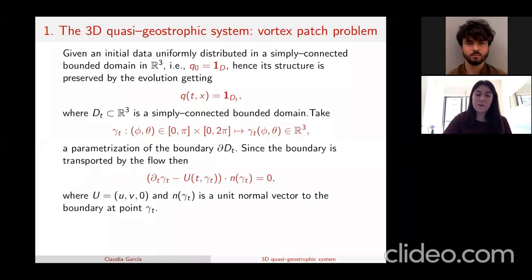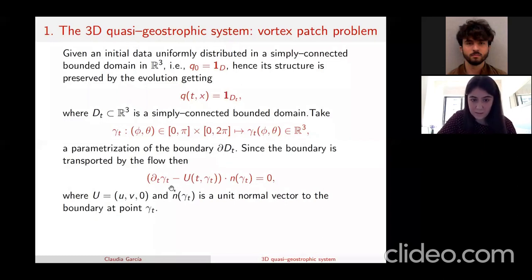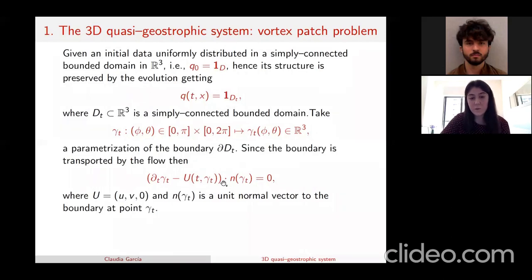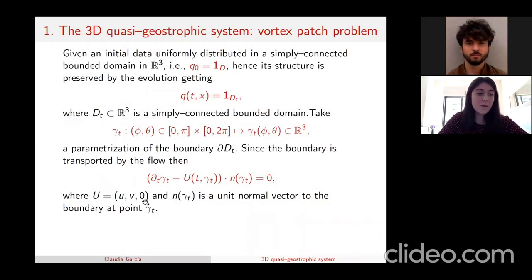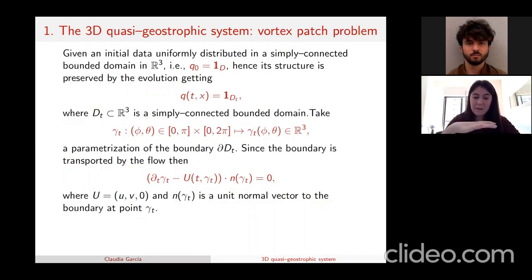The quasi-geostrophic patch problem is equivalent to solutions of an ODE for the parameterization. We have the derivative of the parameterization minus the velocity field (first two components plus zero in the third component) dotted with the normal vector to the boundary. Since the third component of u is zero, the third component of the time derivative of the parameterization is zero, meaning there is no mixing between heights — the domain is changing independently at every height.